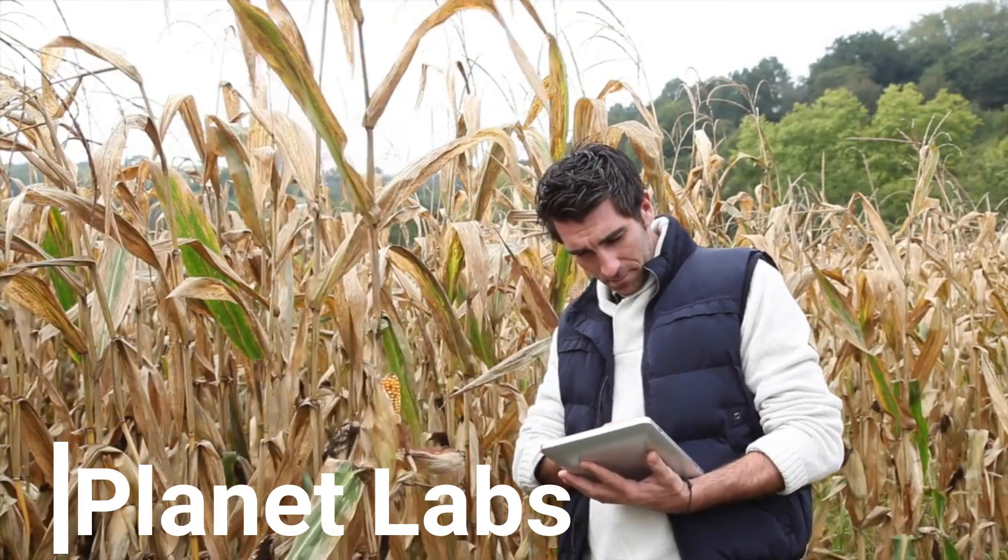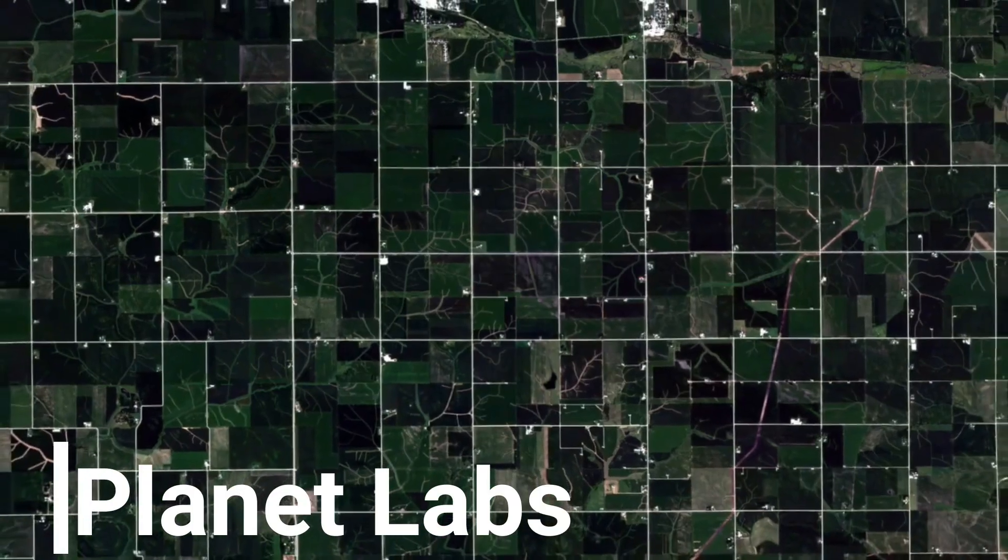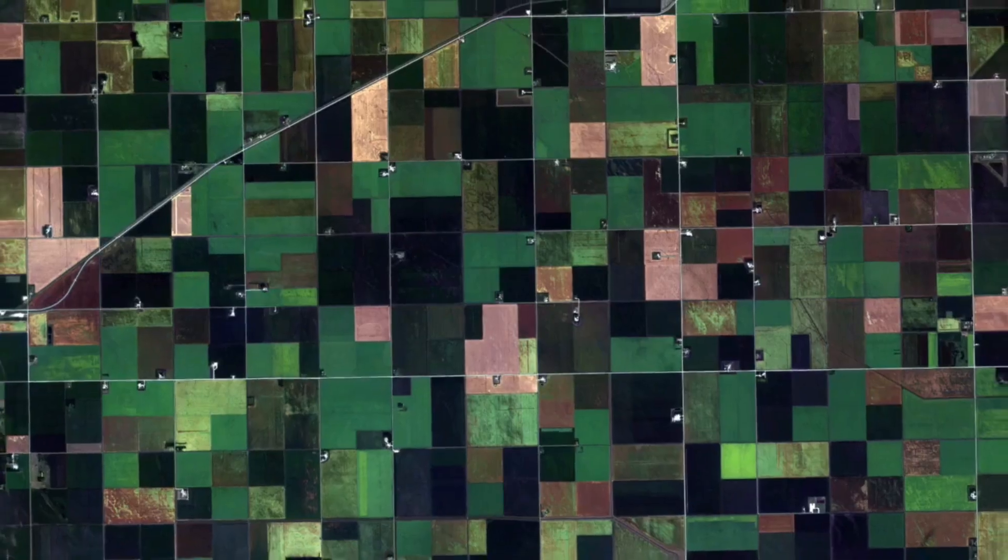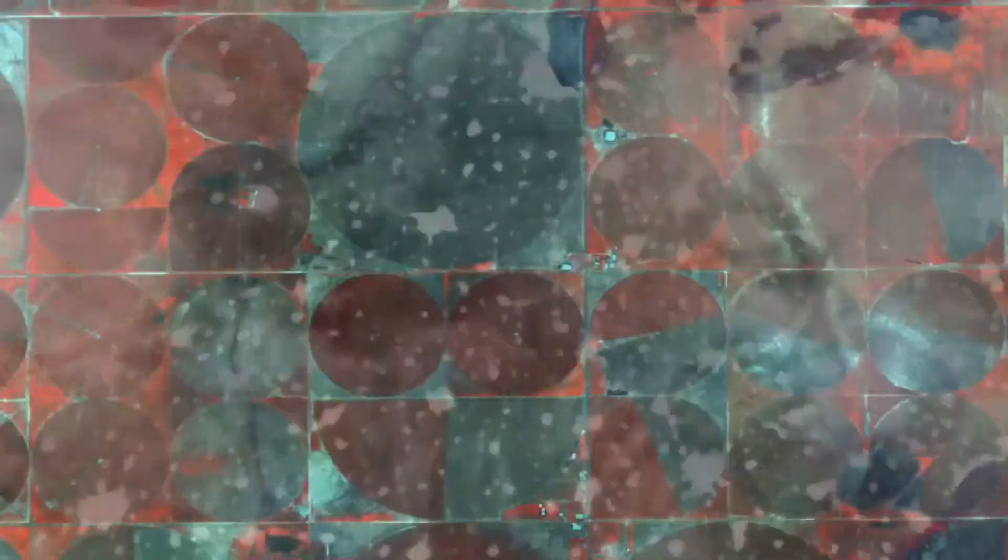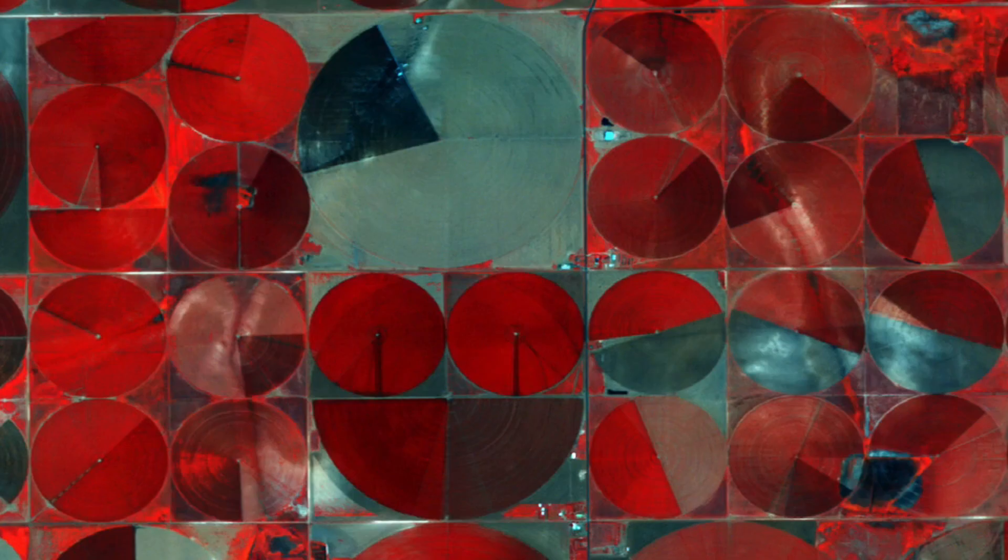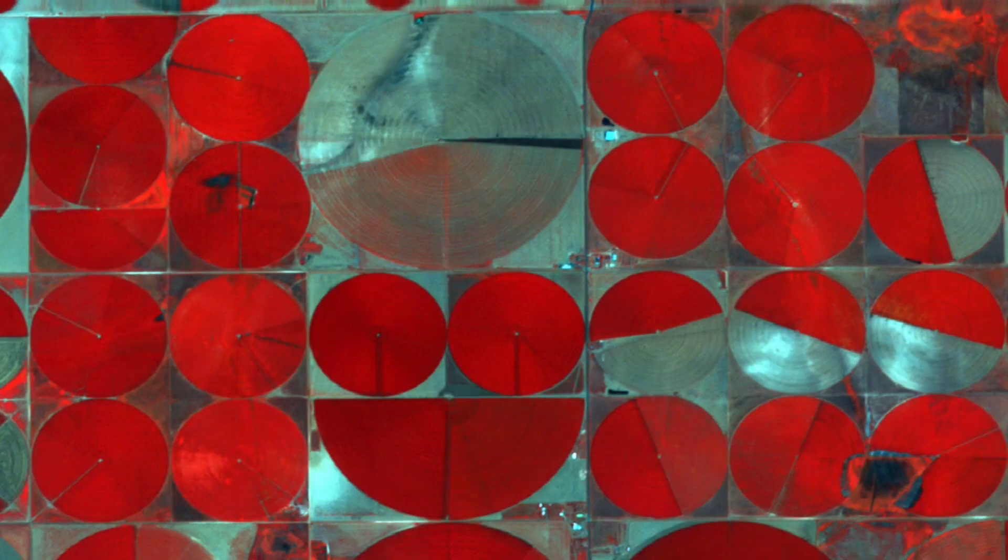One quick example of this could be farmers. They're actually using satellites and drones a lot more now to better understand the health of their crops. This has allowed them to target areas of their fields that need more water or maybe are experiencing issues with bugs and this has then increased their yields and allowed them to be able to produce more food and make more money.